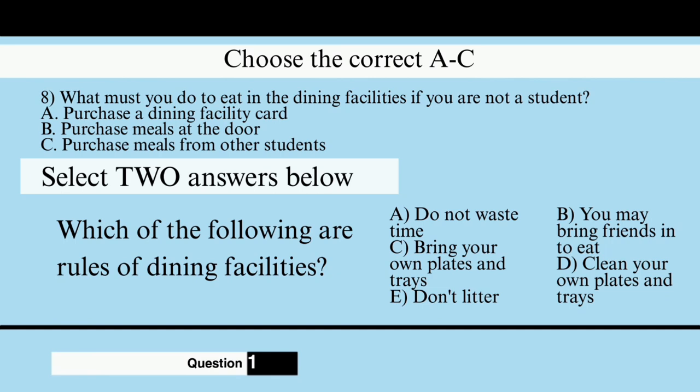Every student that has paid full tuition and dormitory fees has already paid for their dining facility fees. Students can eat at any time and in any amount for free. If you are a student that does not live in a dormitory, you can still purchase a dining facility card. This card will entitle you to the full services of the dining facility. This card is available only for students and is not open to the general public. If you are not a student and wish to dine here, you must purchase meals at the door.